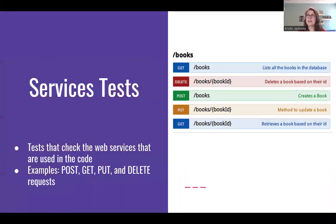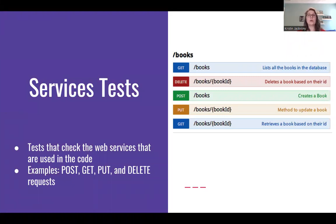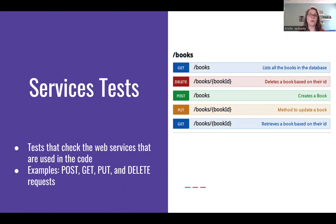Then we have services tests, which check the web services used in the code — often this means APIs. For example, we might have an API with an endpoint called books, and various HTTP verbs: a GET to list all books in the database, or a POST to create a book. With services tests, you are checking to make sure all of your API calls are working correctly.